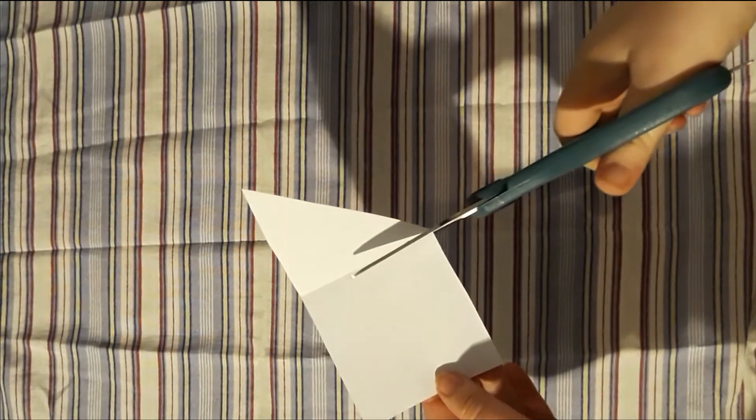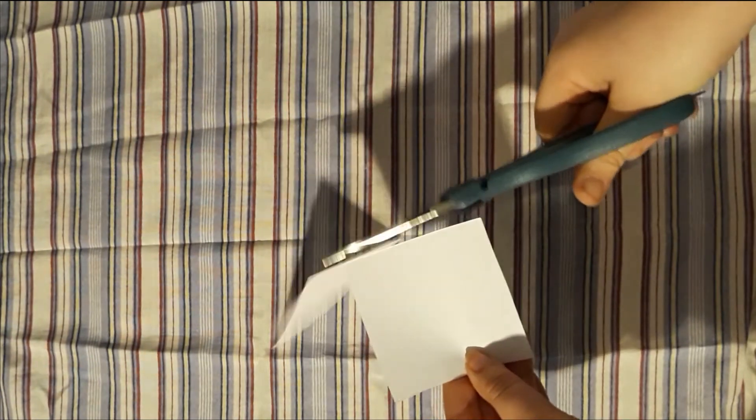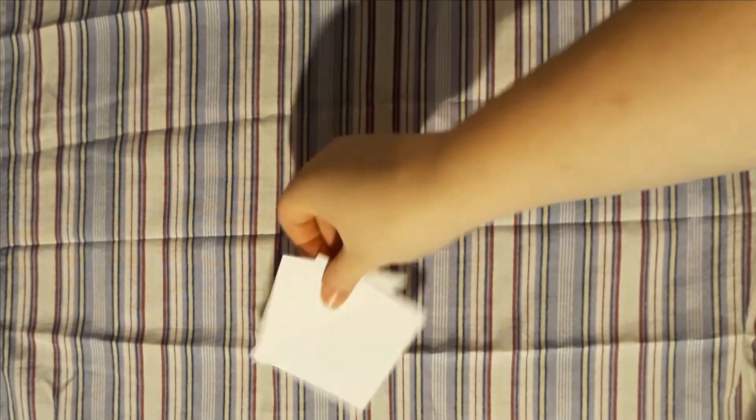Take your scissors and cut along your new crease just like this. You should now have a triangle and a square. Put both of these shapes to the side.